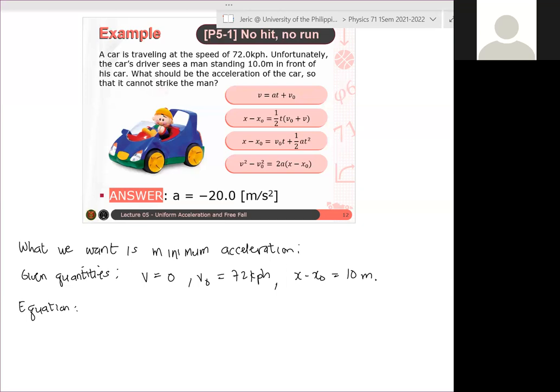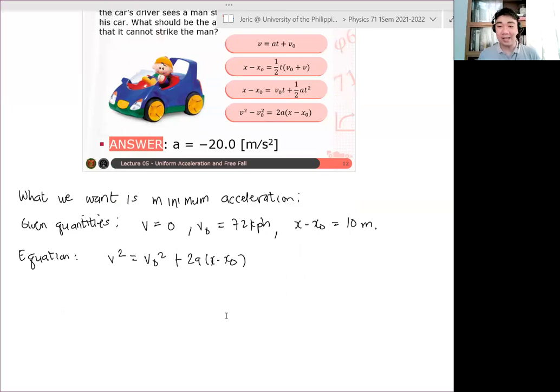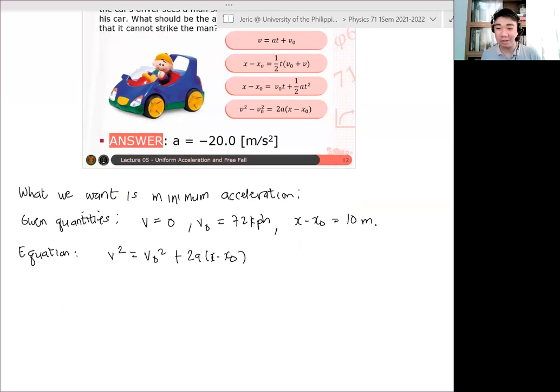Velocity position. We will use the velocity position equation which is v squared equals v naught squared plus 2a quantity x minus x naught. Ngayon lahat ng mga hinahanap dito sa equation na to given, so except for what? The acceleration a.